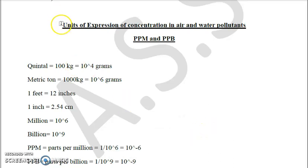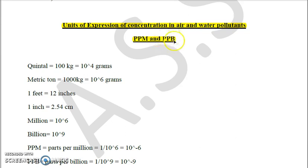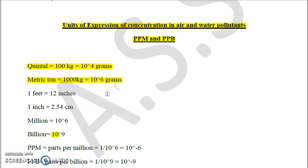We will be talking about units of expression of concentration in air and water pollutants. One is ppm, which is equivalent to milligram per liter or milligram per decimeter cube, and one is ppb, which is microgram per liter or microgram per decimeter cube. Before we start, we have to remember that one quintal equals 1000 kg, which is 10^4 grams, and one metric ton is 1000 kg or 10^6 grams. One foot corresponds to 12 inches, one inch is 2.54 centimeters, one million is 10^6, and one billion is 10^9.